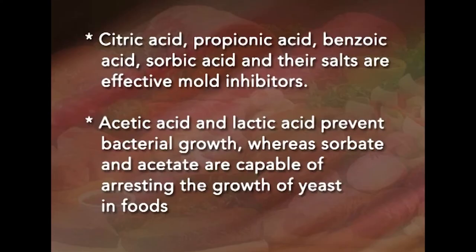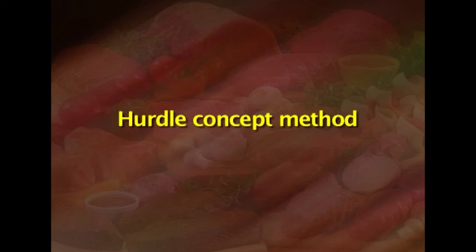In addition to the above methods, many chemicals prevent microbial growth in foods, acting as preservatives. Several organic acids are generally recognized as safe for use as chemical preservatives, including citric acid, propionic acid, benzoic acid, sorbic acid, and their salts, which are effective mold inhibitors. Acetic acid and lactic acid prevent bacterial growth, whereas sorbate and acetate are capable of arresting the growth of yeast in foods. Then we have the hurdle concept.